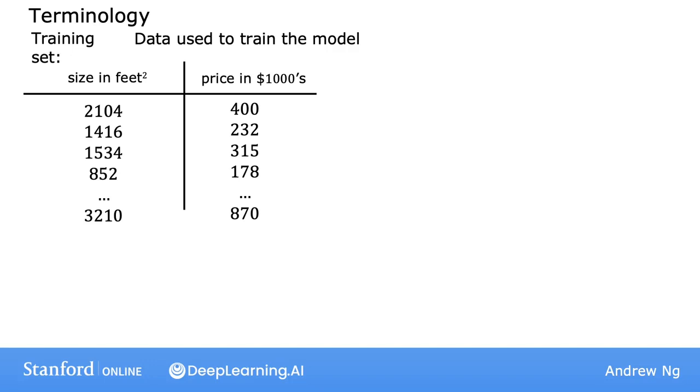In machine learning, the standard notation to denote the input here is lowercase x, and we call this the input variable. It's also called a feature or an input feature. For example, for the first house in your training set, x is the size of the house, so x equals 2,104.